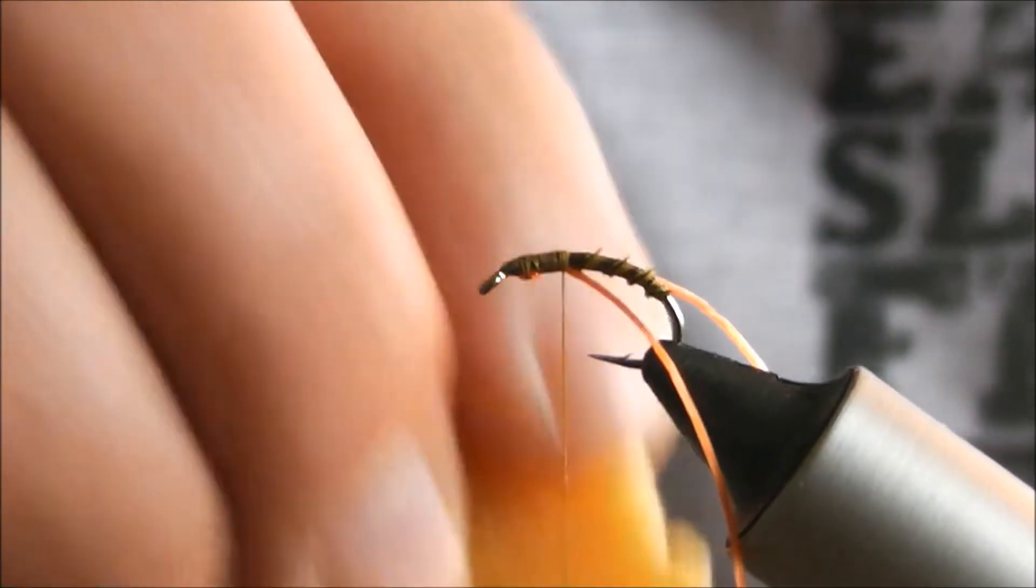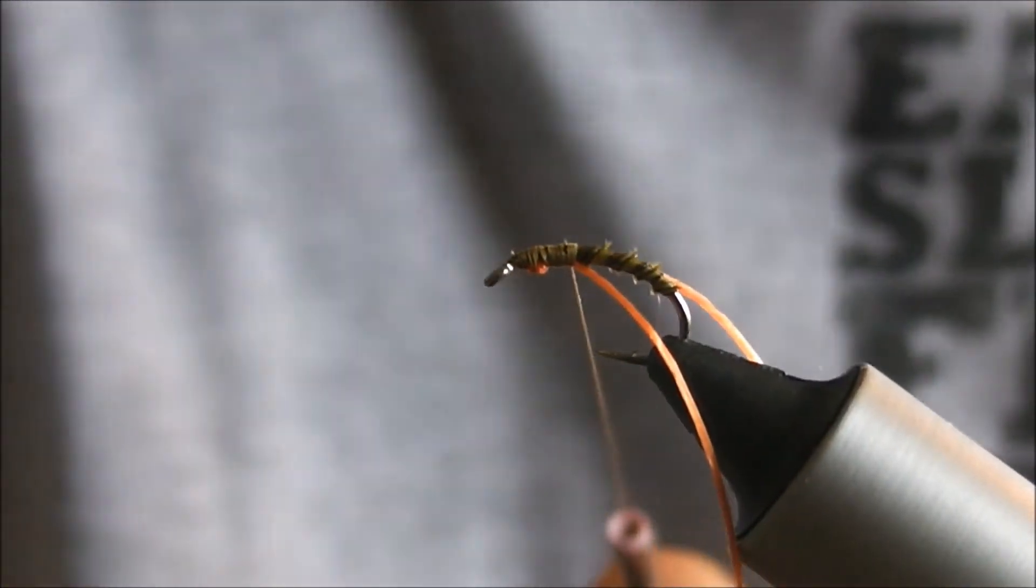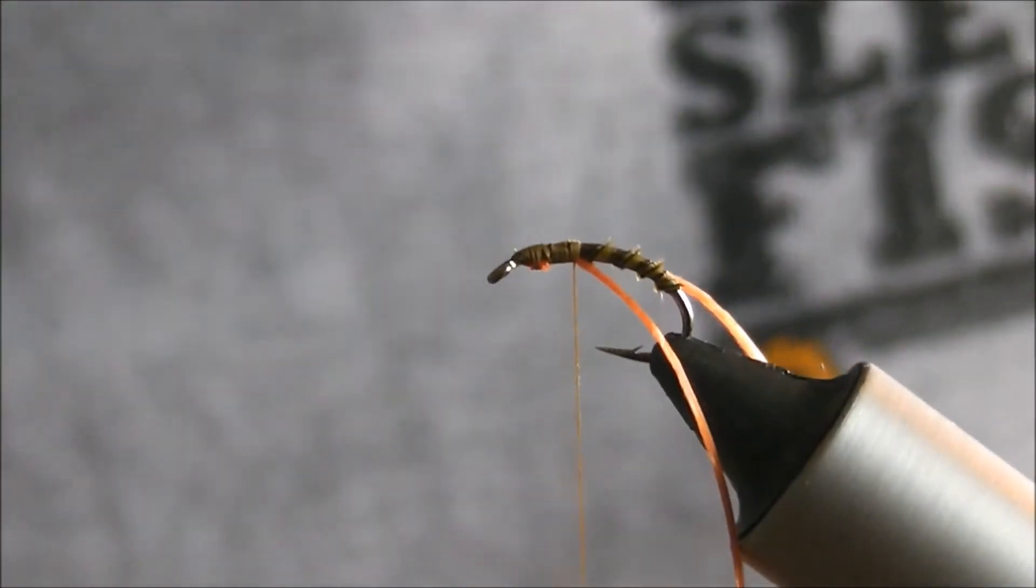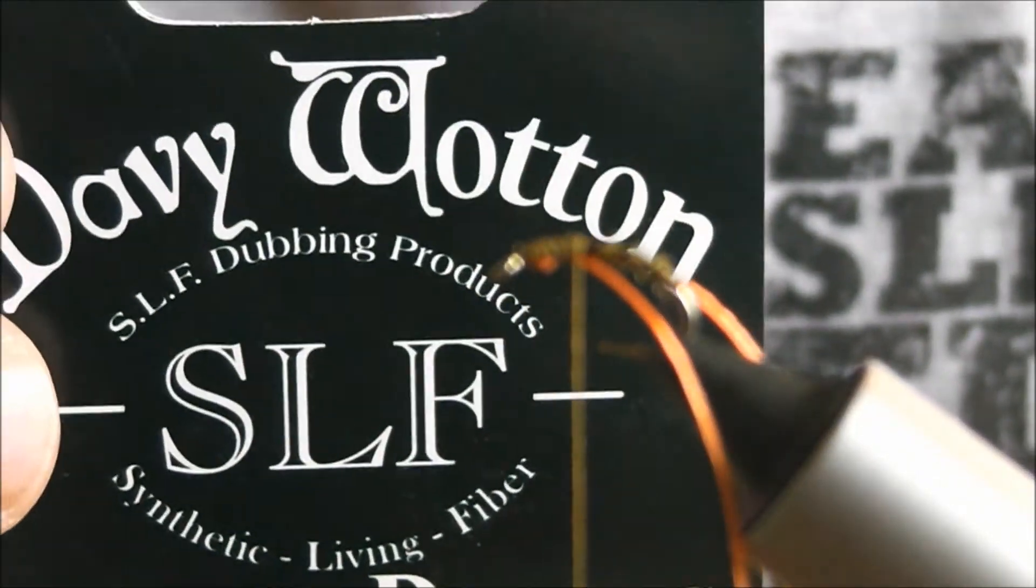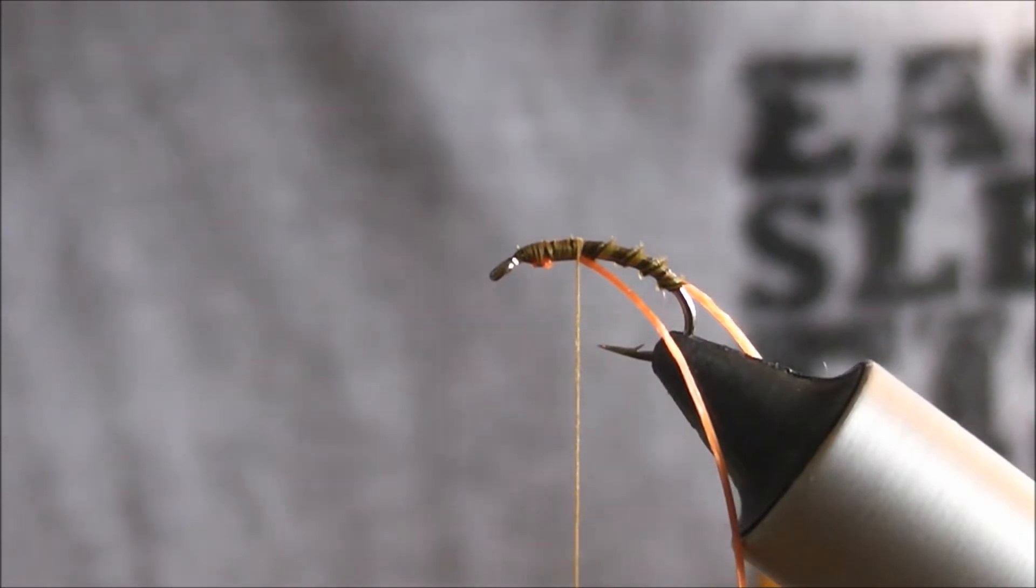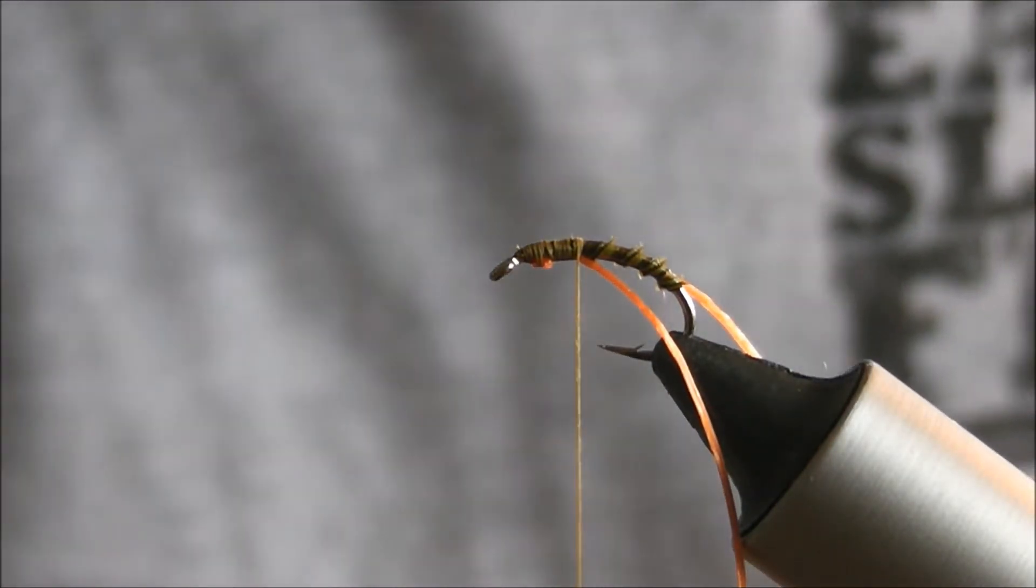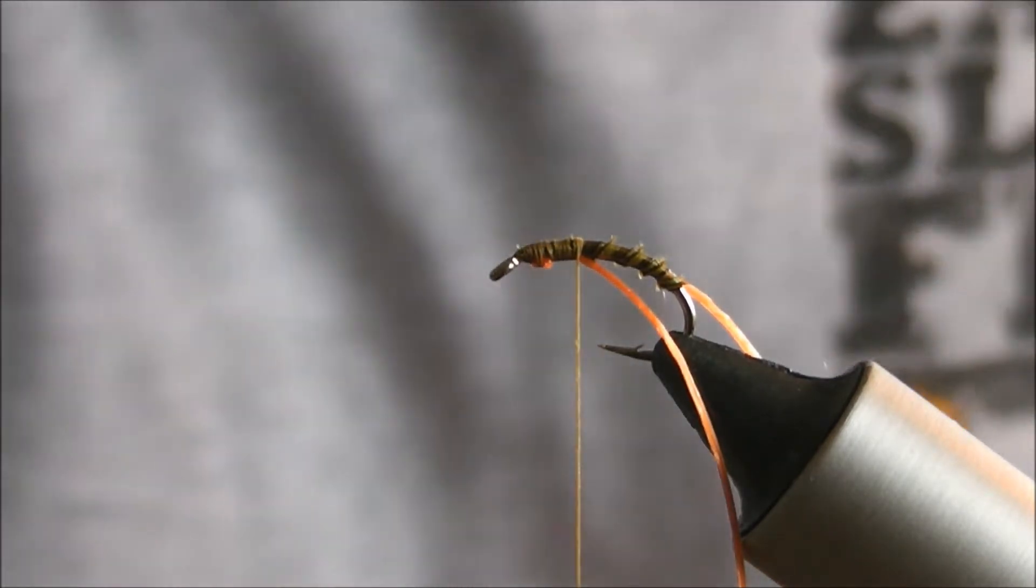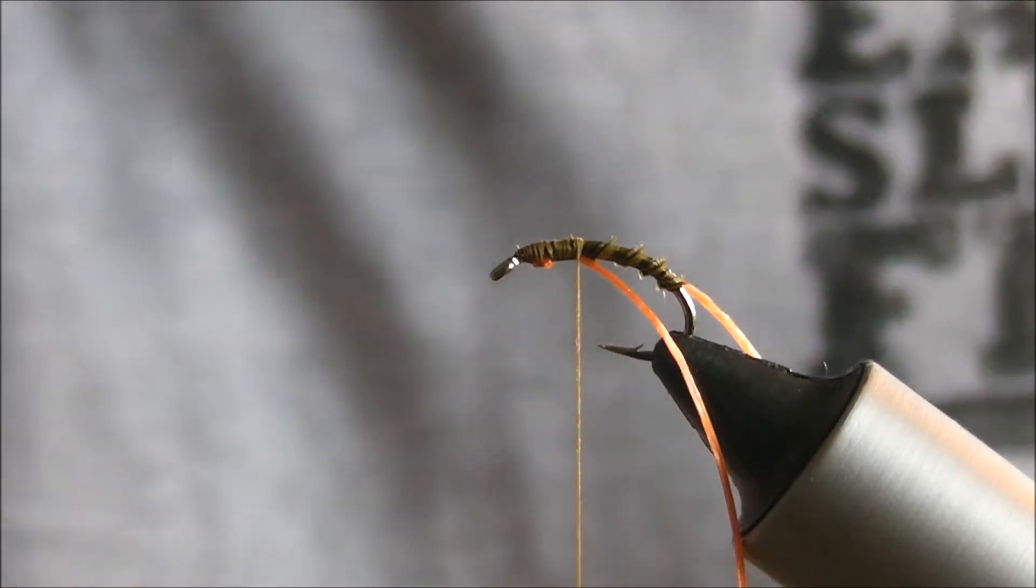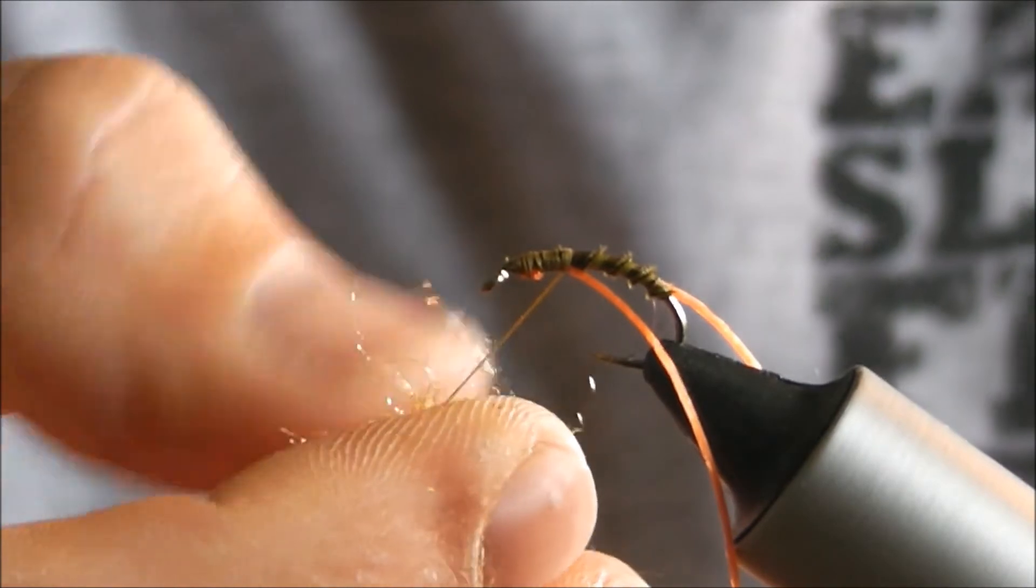Now give your thread a bit of wax. Thorax color, this is quite an important part so it's kind of what you've got confidence in. I use an SLF. You can use seal's fur, you could use hare's ear. SLF, this is technically I think called a ginger, but when it gets wet it goes a dark olivey color. So you just want a little bit, just a little pinch, just like that much. Lay it on the thread, just use your finger and your thumb, just brush it down evenly.